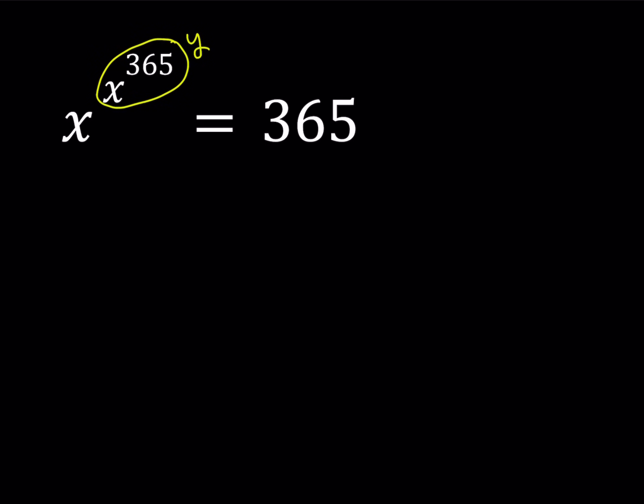So I'm basically saying that x to the power 365 is equal to y. So from here I can safely say that x is equal to, if I raise both sides to the power 1 over 365, so I can basically raise both sides to this power. Then these two numbers are going to cancel out and I'm going to end up with x equals y to the power 1 over 365.